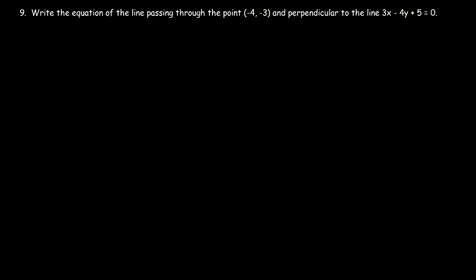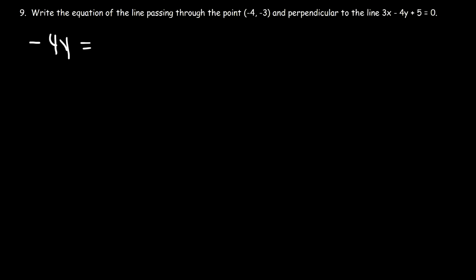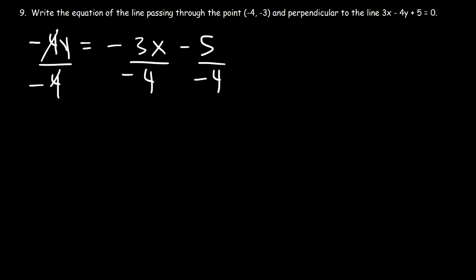Number nine: write the equation of the line passing through the point (-4, -3) and perpendicular to the line 3x minus 4y equals negative 5. First find the slope: move 3x and 5 to the other side to get negative 4y equals negative 3x minus 5, then divide by negative 4. So y equals 3/4 x plus 5/4 — the slope of this line is 3/4.